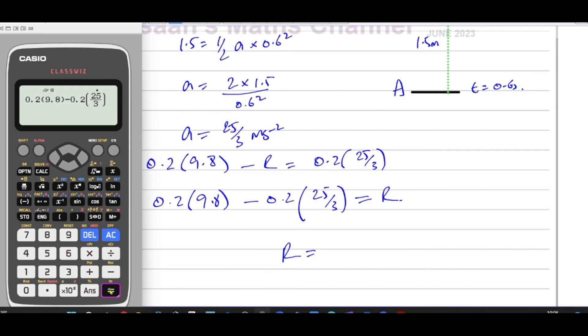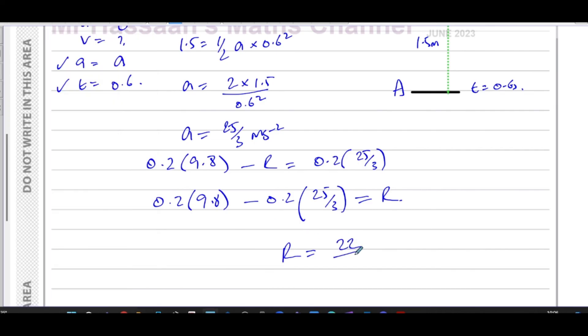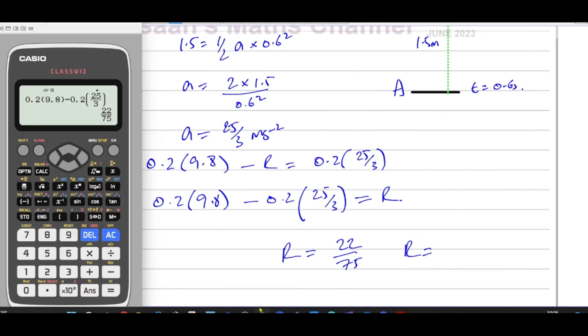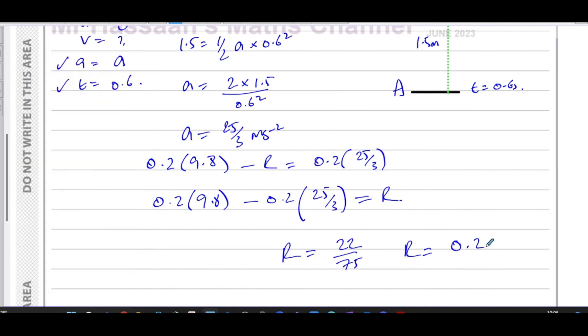And that gives us 22 over 75, which we can round to 3SF. That gives us 0.2933 continues. So R is equal to 0.293 newtons.